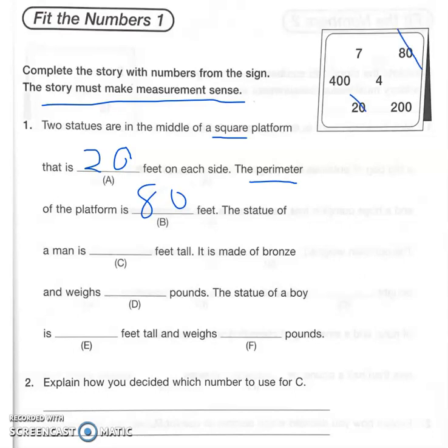Okay, the statue of a man is blank feet tall. I can probably rule out 200 and 400, that seems really big. Seven and four, I mean seven is closer to a man's height but I'm not 100% sure yet. It's made of bronze and weighs blank pounds, so it's probably heavy, 200 or 400. The statue of a boy is blank feet tall.